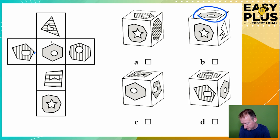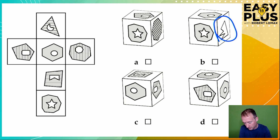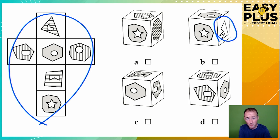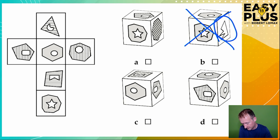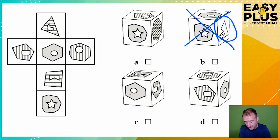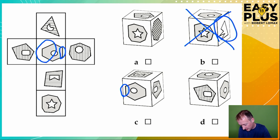We can see it here. So now let's look at what's next to it. Well, immediately we can see this thing next to it that doesn't appear anywhere in our net, so this cannot be an answer. We also see it here. If we look at this carefully, we can see that this shorter edge here is actually on this side, and this longer section here is to the right.